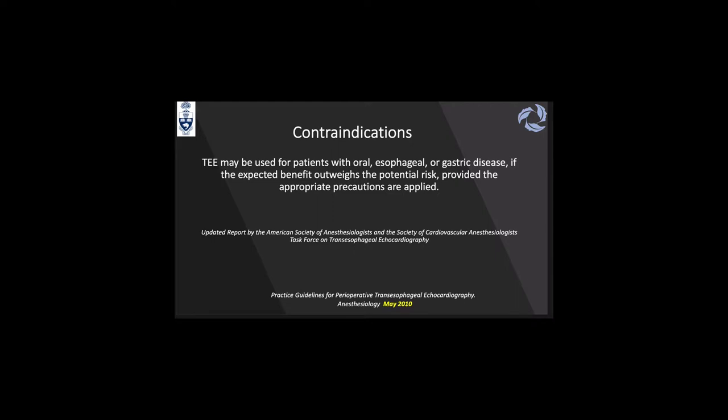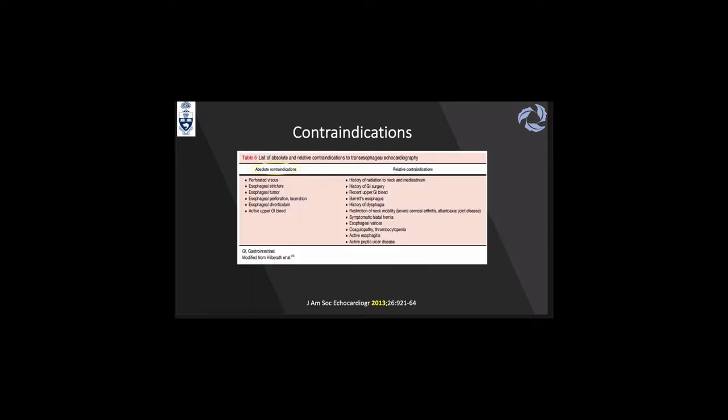In May 2010, practice guidelines from the SCA were updated in conjunction with the American Society of Anesthesiologists, stating that TEE may be used for patients with oral, esophageal, or gastric disease if the expected benefit outweighs the potential risk, provided appropriate precautions are applied. The 2013 ASE update keeps the same statement: absolute contraindications are a perforated viscus, esophageal stricture, tumor, diverticulum, or perforation/laceration. A new addition since 2013 is that an active upper GI bleed is now an absolute contraindication.